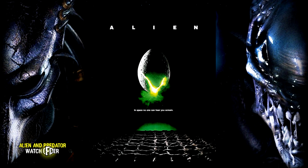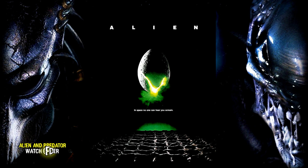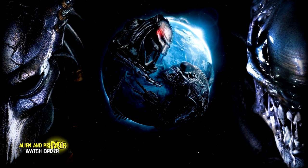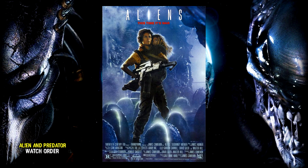Let's start with Alien of 1979, The Eighth Passenger, which will last for 1 hour and 57 minutes. After a space merchant vessel receives an unknown transmission as a distress call, one of the crew is attacked by a mysterious life form, and they soon realize that its life cycle has merely begun.